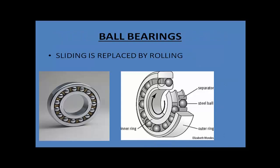We have learned that sliding friction requires more force to push or pull an object compared to rolling friction, so it is easier to roll any object than to slide it. In large industries and even in our homes, sliding is converted into rolling by use of what we call ball bearings. So sliding is replaced by rolling with the help of ball bearings.